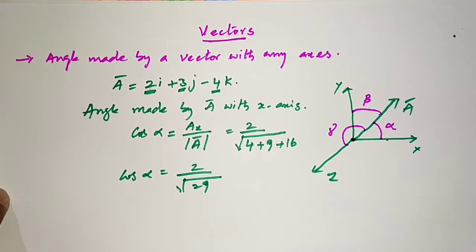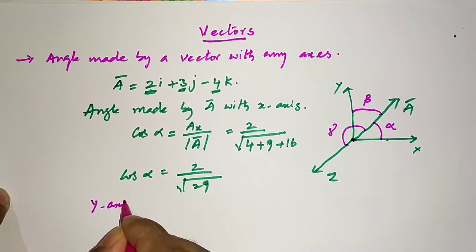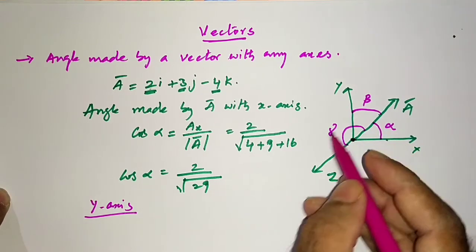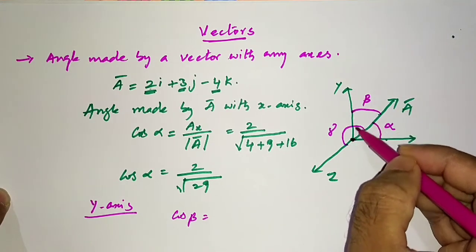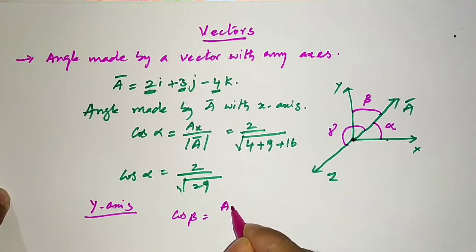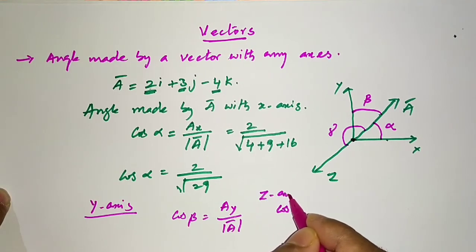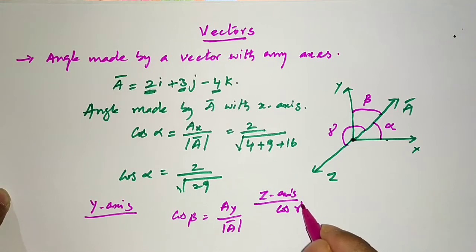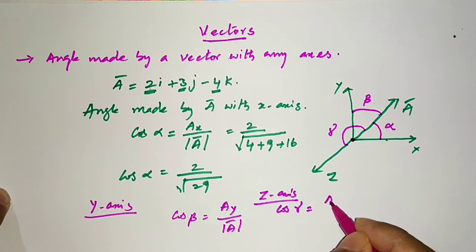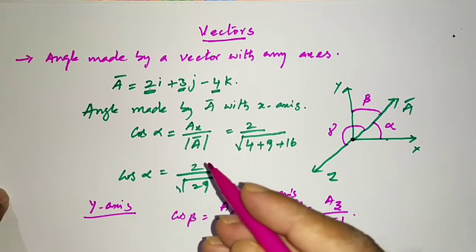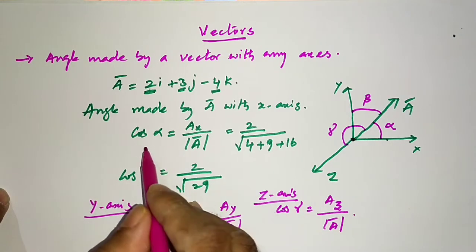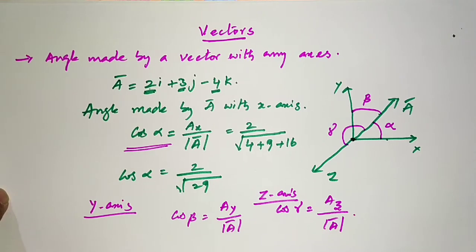Similarly, the angle made by the vector with the y-axis: cos β = Ay / |A|. And the angle made by the vector with the z-axis: cos γ = Az / |A|. In this way, one can calculate the angle made by any vector with the x-, y-, and z-axes.